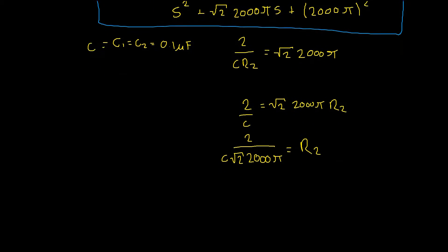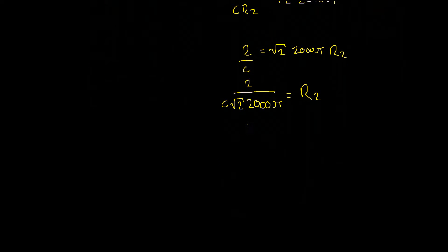that would be 2 divided by 0.1 times 10 to the power of negative 6 times root 2 times 2000 pi which will equal 22.5 kilo ohms. Okay so we've found our first resistor value.